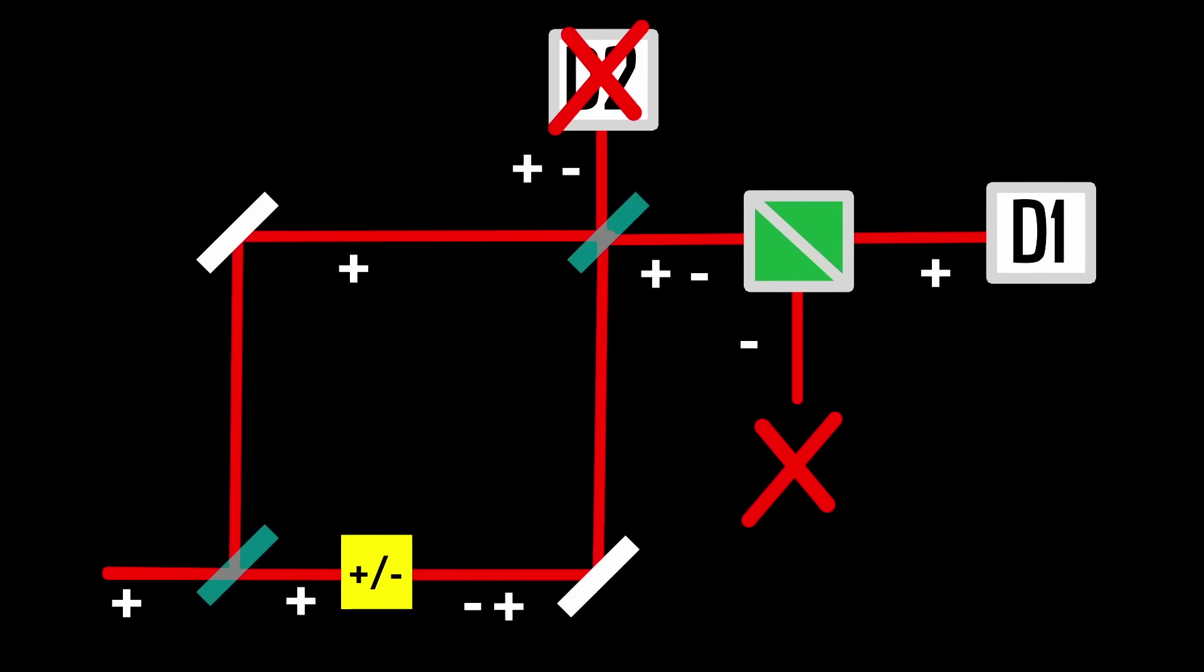So you've changed the polarization on the lower path and that made a difference for the measurement outcome. You conclude that even though the photon was on the upper path, its polarization was on the lower path. Because if there wasn't anything there, how could you have changed it?